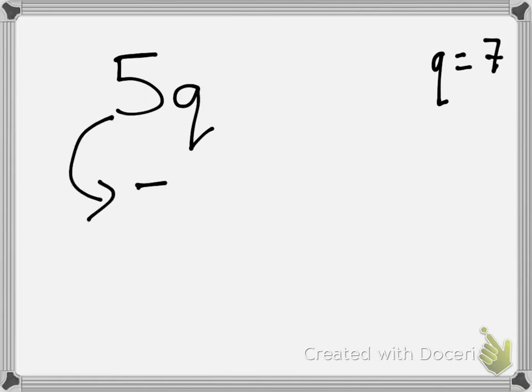Okay, so let's take a look at another example. This time I've got 5q. Now, if q is worth 7, then I would do 5 multiplied by 7 because 5 is next to q. And if I know what q is worth, then I do 5 multiplied by 7, and that would be 35.